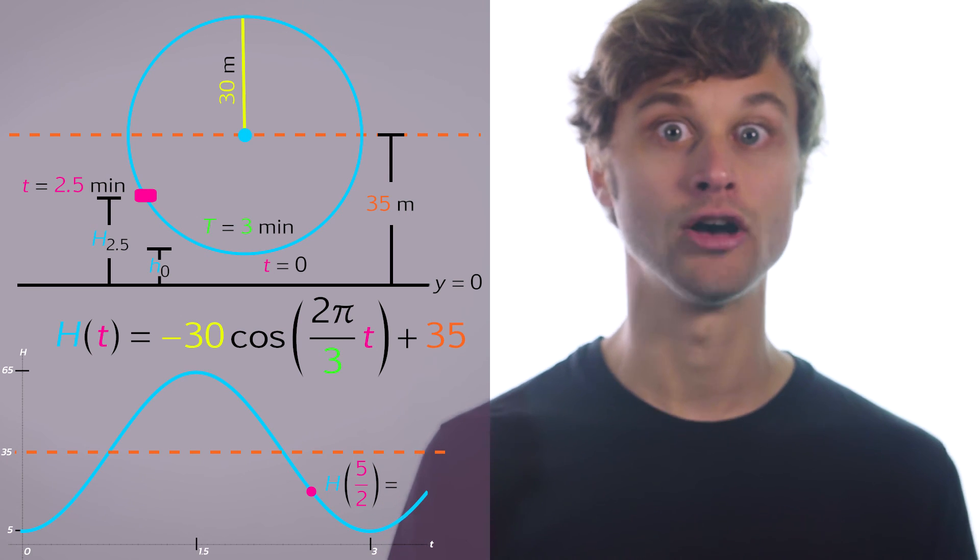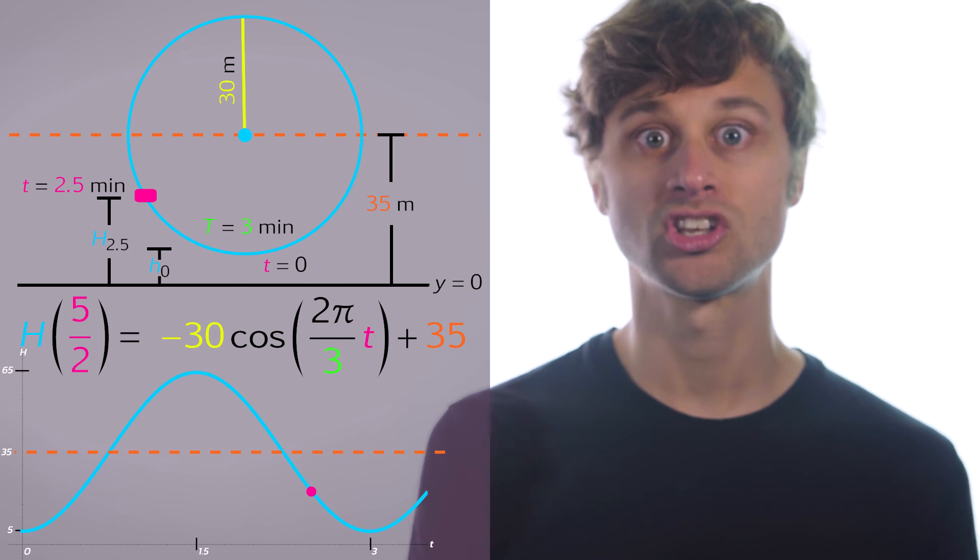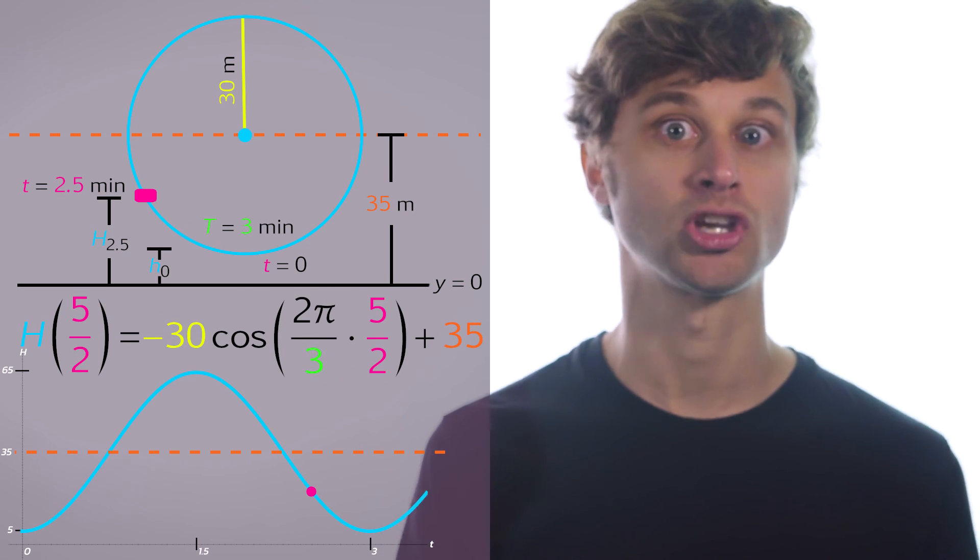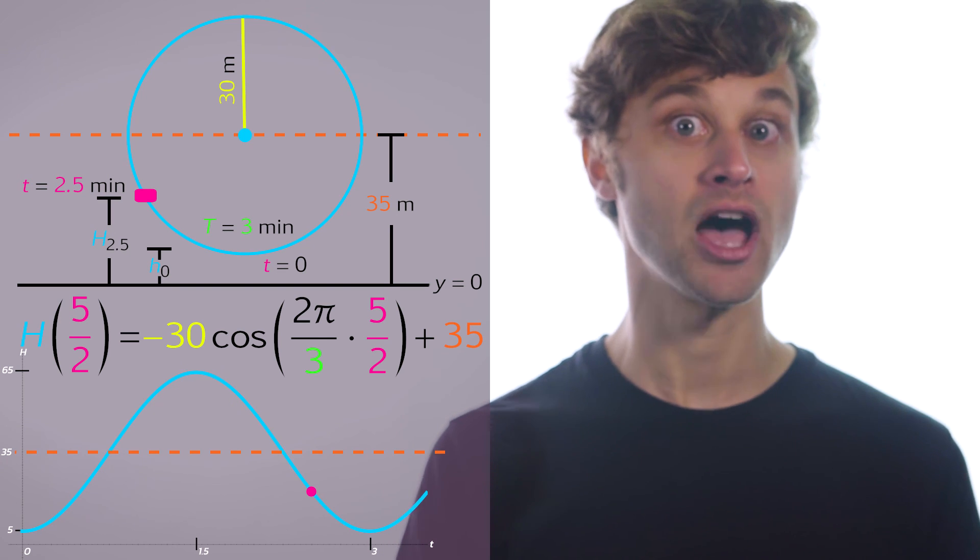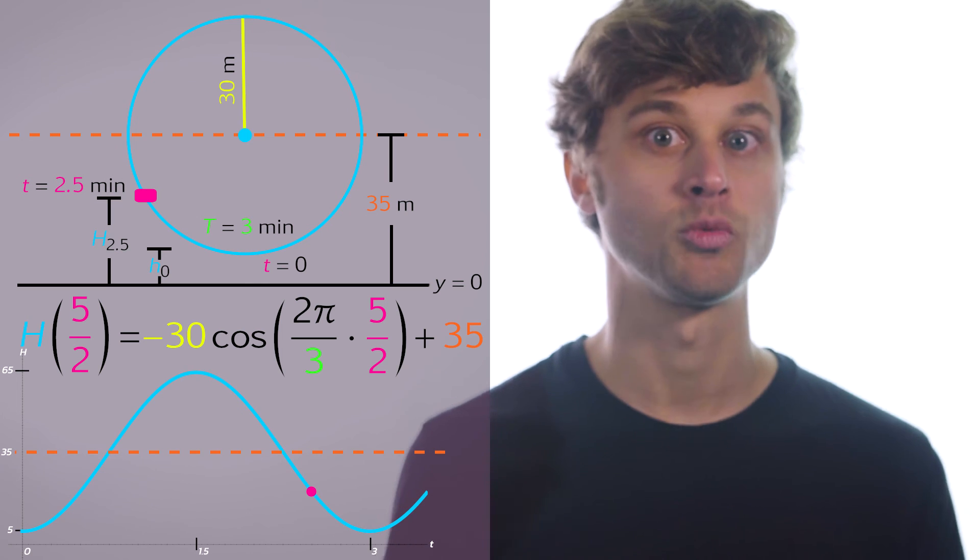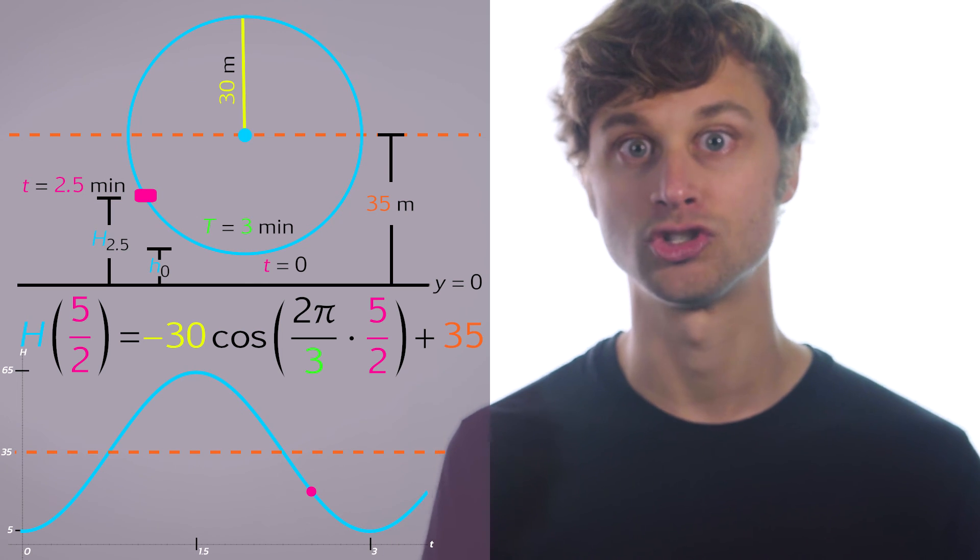So we want to find what is the value of H of 5 over 2. Well, we're just going to plug in 5 over 2 for t, and I get this: negative 30 times the cosine of 2π over 3 times 5 over 2 plus 35. So let's now reduce what's in the parentheses of the cosine function. 2π over 3 times 5 over 2—that reduces to 5π over 3.